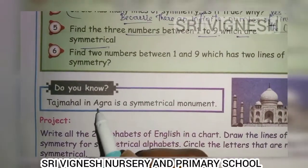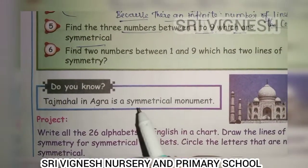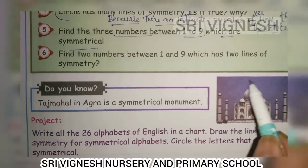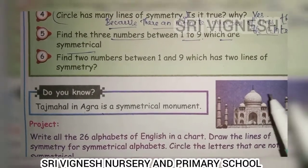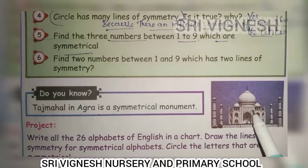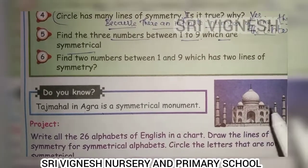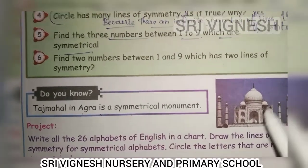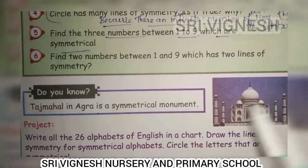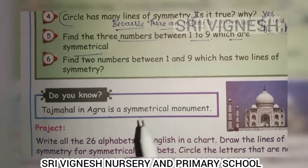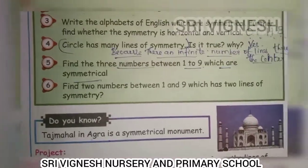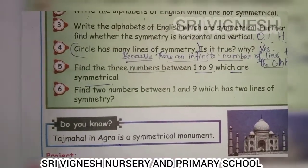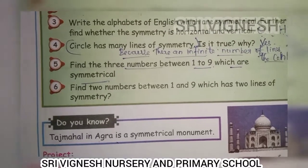Next, find two numbers between 1 and 9 that have two lines of symmetry. These are the numbers between two points. Thank you so much.